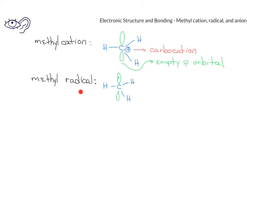The methyl radical is very similar to the methyl cation, except that it now has a single electron in the p orbital. Any species that has an odd number of electrons, or an unpaired electron, is going to be called a radical.